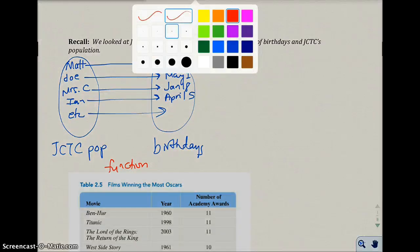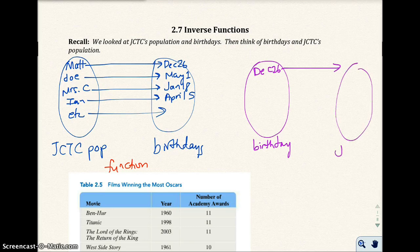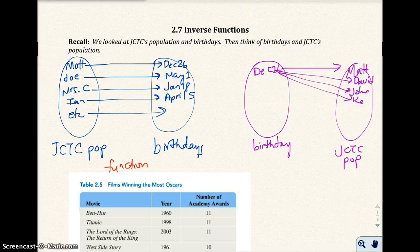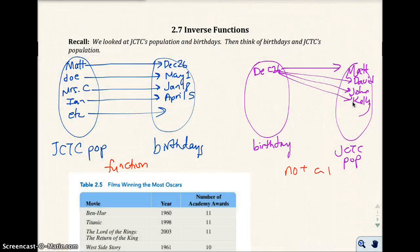But what happens when we inverse this? Let's say we take the birthdays and make that our input. So let's say we type in the computer December 26. What happens is if we type in December 26, most likely from the JCTC population, we'll probably get more than one person — we have Matt, David, John, Kelly, and so on. So we make the input the birthday, and we get more than one output. This is no longer a function, because each input would yield more than one output.